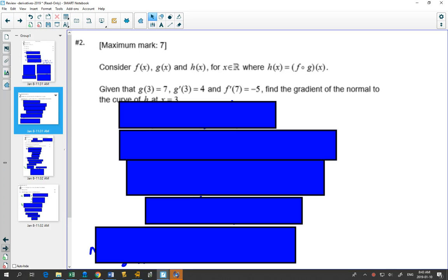7-mark question. Consider f of x, g of x, and h of x, where h of x equals f composition g of x. The first thing I personally do whenever I see this notation is I change it to the notation I'm more comfortable with. Maybe you're more comfortable with that notation. Whichever one you're more comfortable with, change the notation to something that you can work with better. Given that g of 3 equals 7, g prime of 3 equals 4, f prime of 7 equals negative 5, find the gradient of the normal to the curve of h at x equals 3.